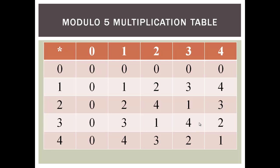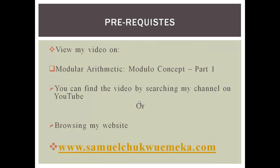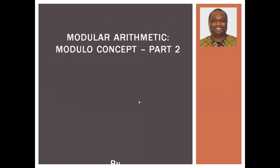For the modulo 5 multiplication table: 2 times 4 is 8, and 8 mod 5 is 3. 4 times 3 is 12, and 12 mod 5 is 2. 4 times 4 is 16, and 16 mod 5 is 1, since 5 times 3 is 15 and 15 plus 1 is 16. Thank you for listening to this video. There are several calculators on my website that you can use to solve questions on modular arithmetic. Have a great day.